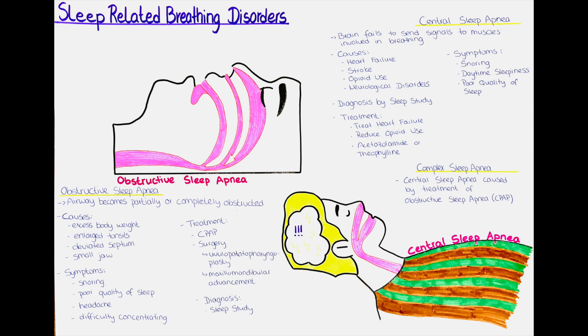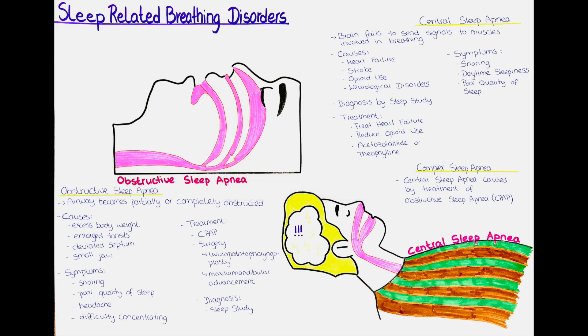To highlight the most important differences between obstructive sleep apnea and central sleep apnea: obstructive sleep apnea is a disorder related to the anatomy of the throat, where the muscles of the throat relax and block off the upper airways during sleep, either partially or completely. In central sleep apnea, the anatomy of the airways is normal, but the brain does not send the needed signals to control the activity of the muscles needed to breathe properly during the night.